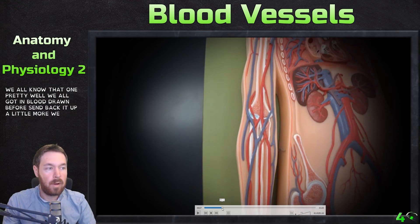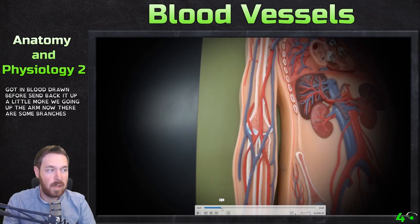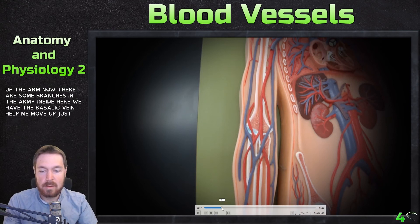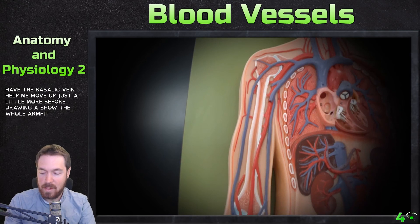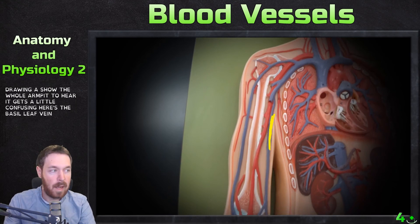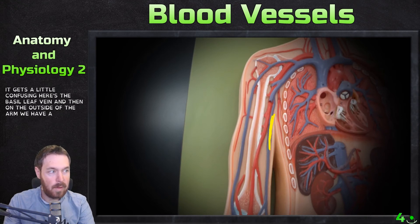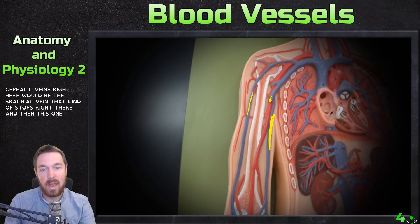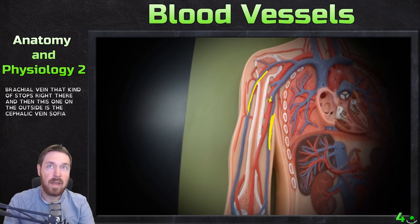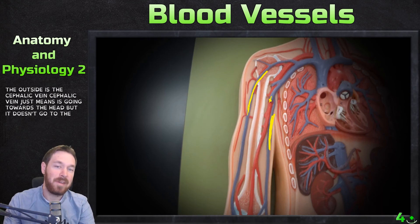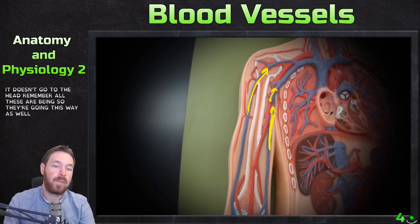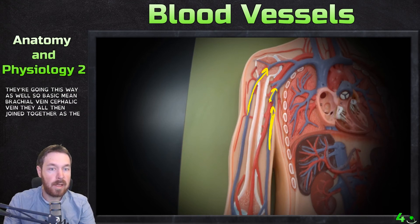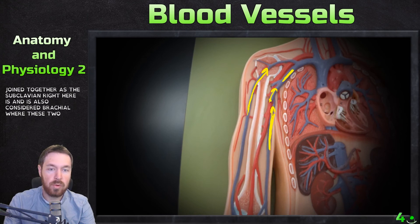Going up the arm, on the inside we have the basilic vein, and on the outside of the arm we have the cephalic vein. There's also the brachial vein. The cephalic vein means 'going toward the head,' but it doesn't actually go to the head — remember, these are veins so blood flows back toward the heart. The basilic, brachial, and cephalic veins all then join together as the subclavian.